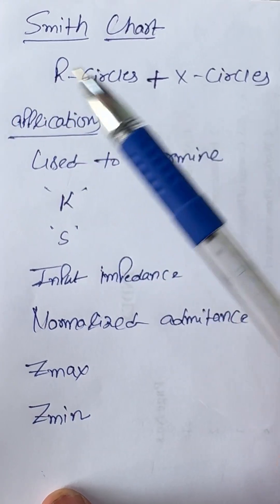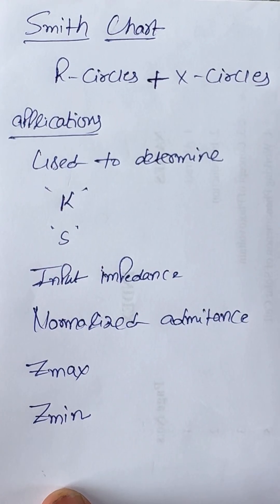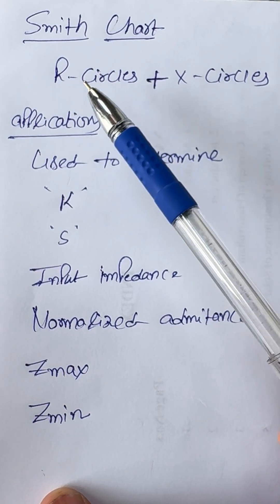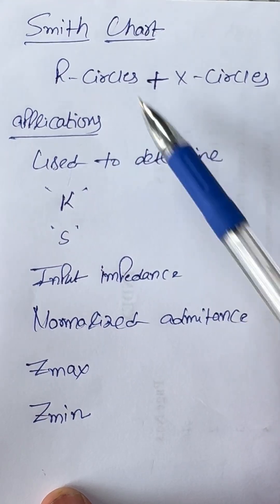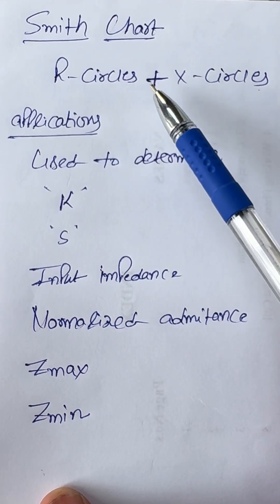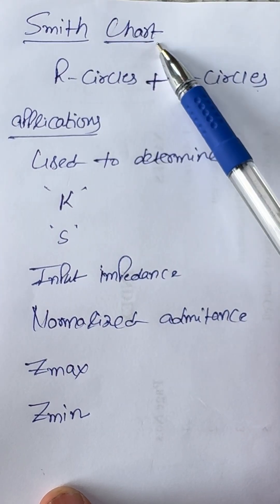Hi, do you know about Smith chart? Simply, Smith chart is a combination of two orthogonal circles called R circles and X circles. Whenever these two circles are added, then Smith chart will be obtained.